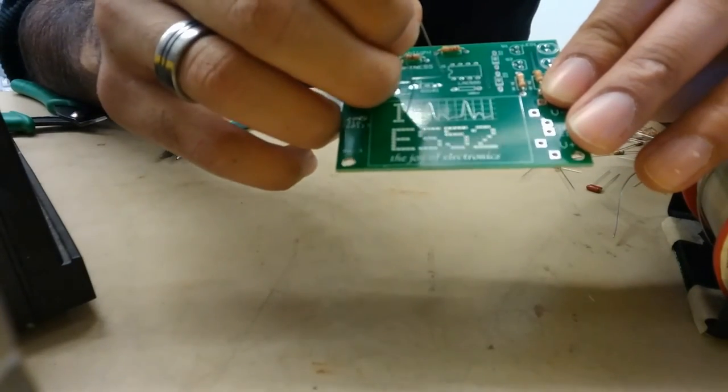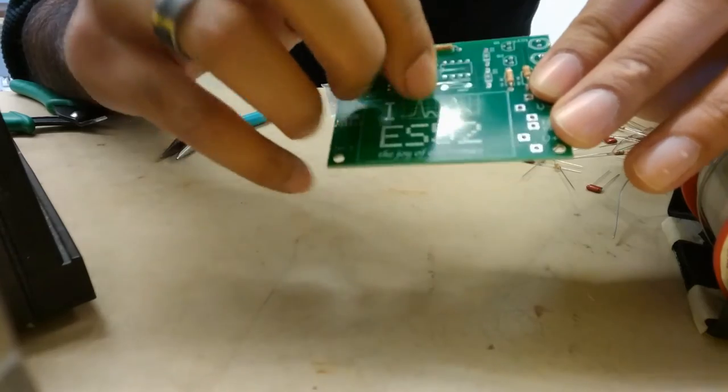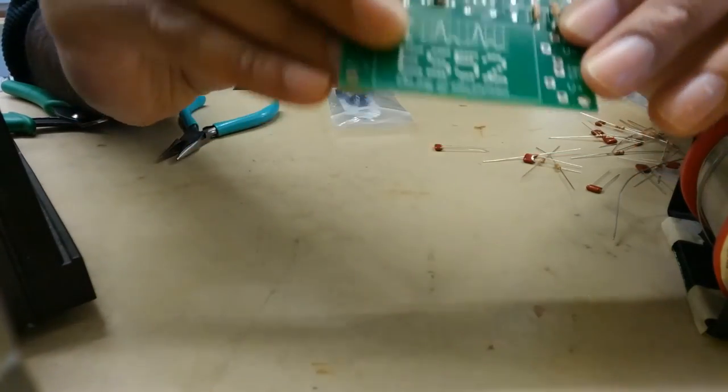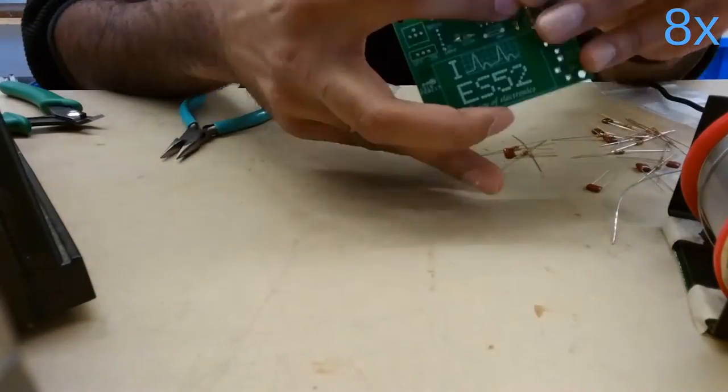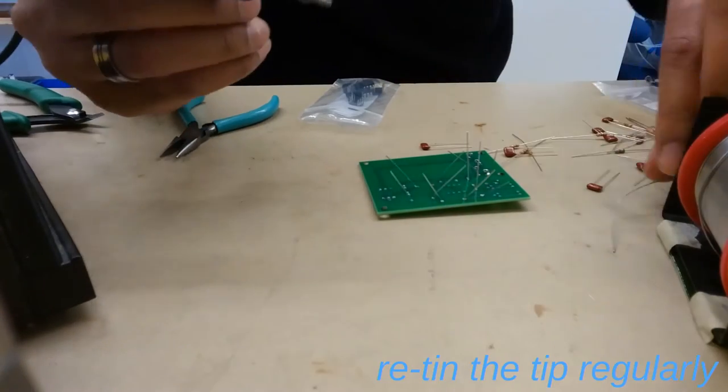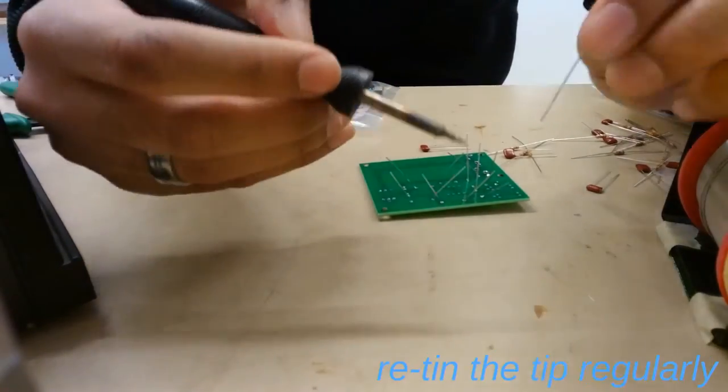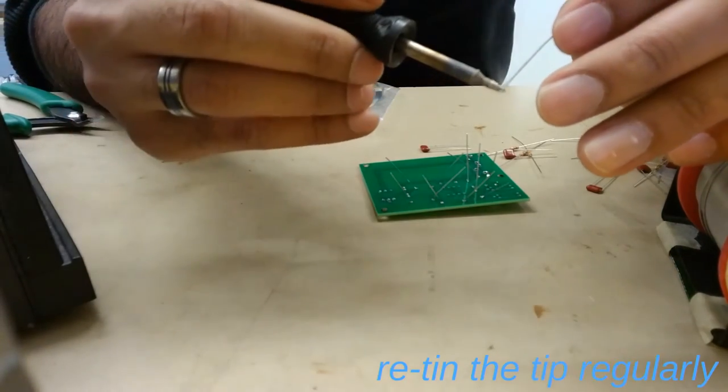So go ahead, put it in, and then assembling your diodes, just the same as assembling every other component. All right, so put a few more components in. You might find it easy to load a bunch of components onto one side of the board. Retin the tip as you need to. So notice I've got, you know, three or four different components that I'm going to solder all at once.